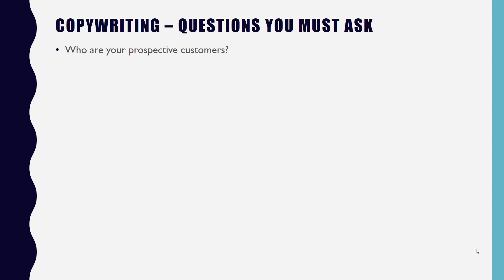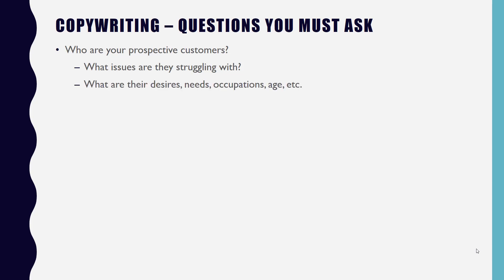As you're creating your copy, there are some questions you want to ask. Just as we talked about knowing your target audience when creating your product outline, you want to know: who are your prospective customers, what issues are they struggling with, and how can your product benefit them? What are their desires, needs, occupations, and ages? Understanding these things helps you become a more effective copywriter.